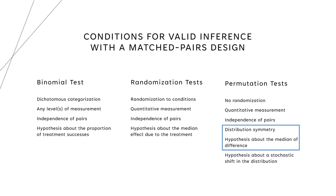If we cannot assume distribution symmetry, we can have a hypothesis about a stochastic shift in the distribution — that is, we can test whether the treatment is moving the distribution upward.